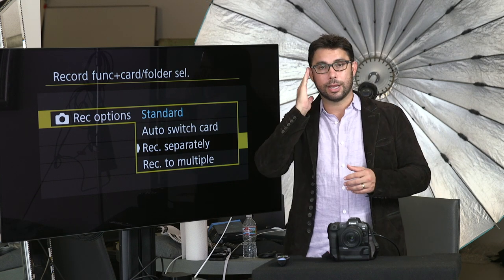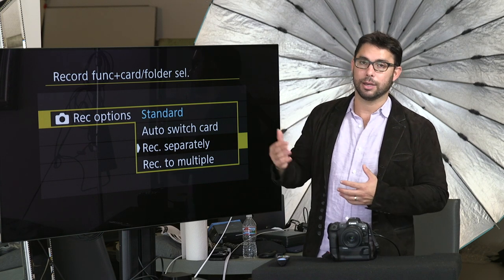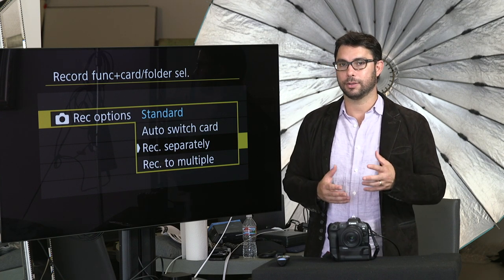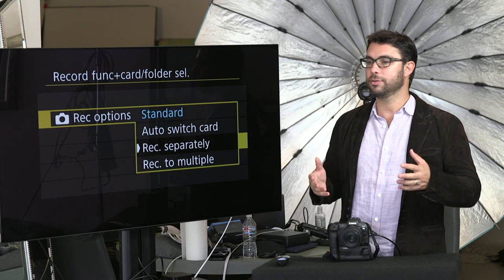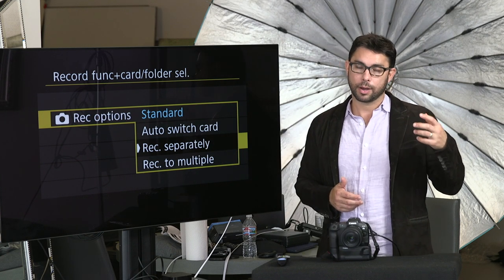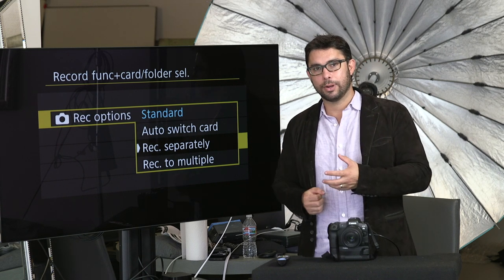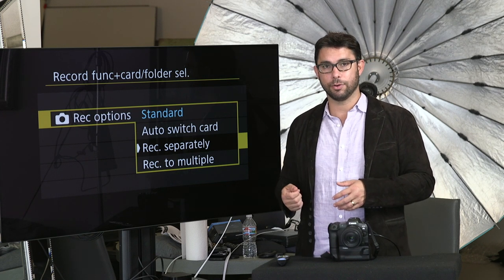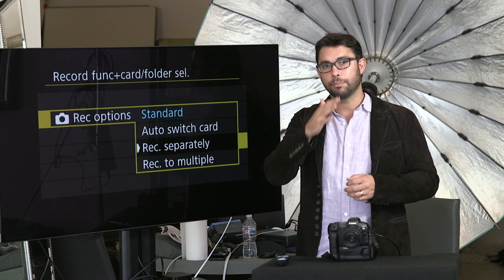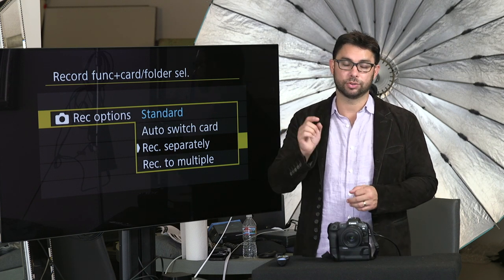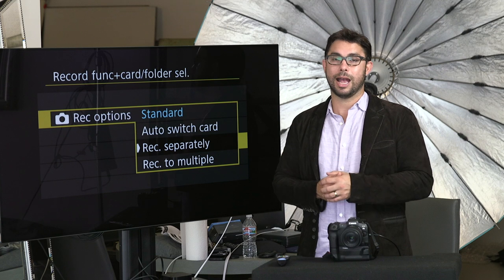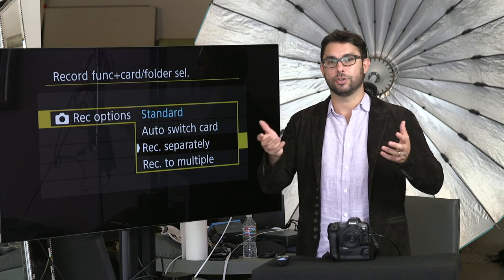Record to multiple is what I usually do. It is set to RAW and the second is set to RAW. If I'm at an event like a wedding and I want to do a slideshow the same night at the reception, I would go to record separately and do RAW on one card and small JPEG on the next card. If you take the SD card out after shooting the whole wedding, it has all the small JPEGs — you can plug that into your computer immediately, all your files show up, you can make quick corrections, and the software takes very little time to process.